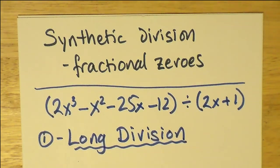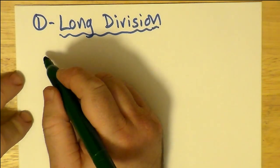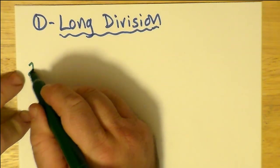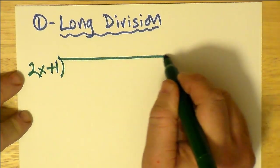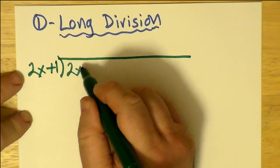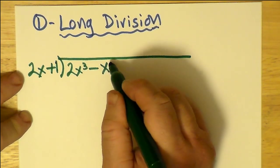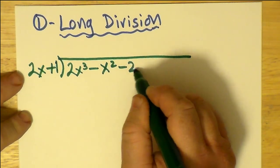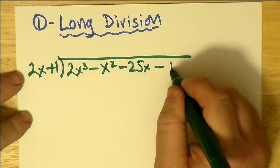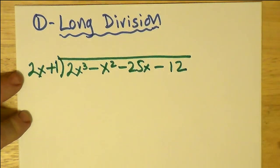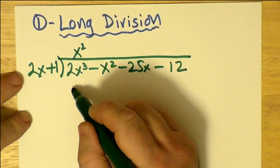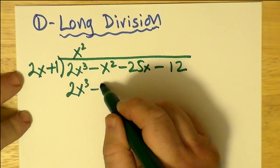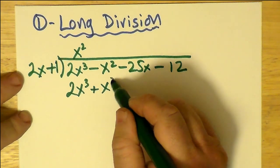Let's set it up. We set it up the way we normally would by having 2x + 1 divided into our cubic. To get 2x³, we have to divide by x², and that means the other thing is x².